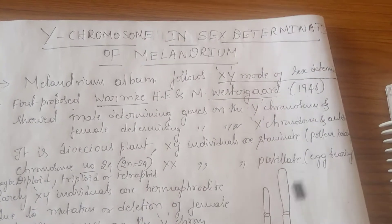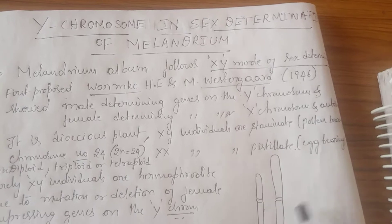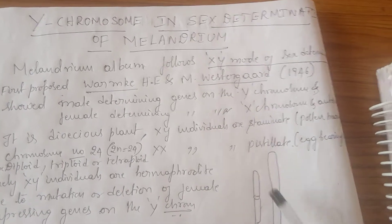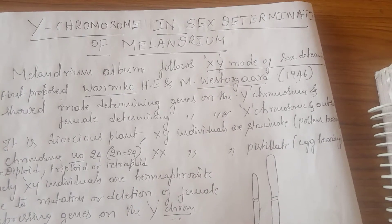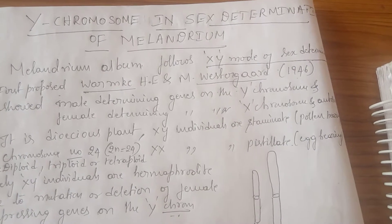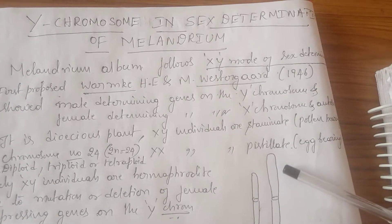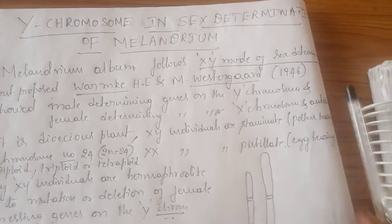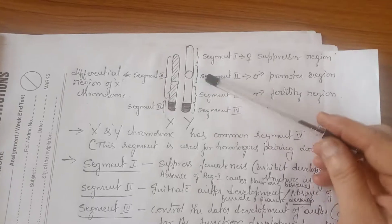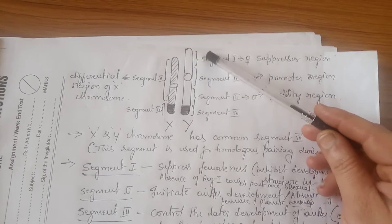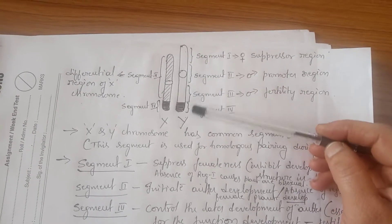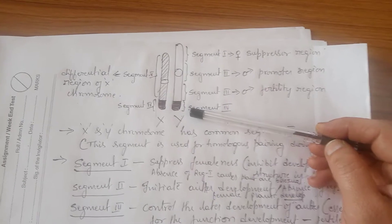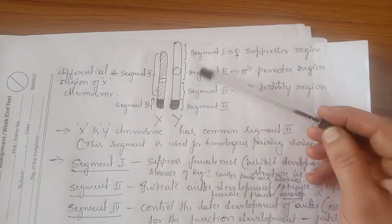When comparing the X and Y chromosomes, the Y chromosome seems to be longer compared to the X chromosome. The mapping of the Y chromosome in Melandrium shows 4 distinct regions, of which 3 distinct regions influence sex determination and male fertility on the Y chromosome.